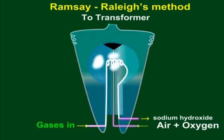Oxygen, if any, is removed by introducing alkaline pyrogallol in the globe.